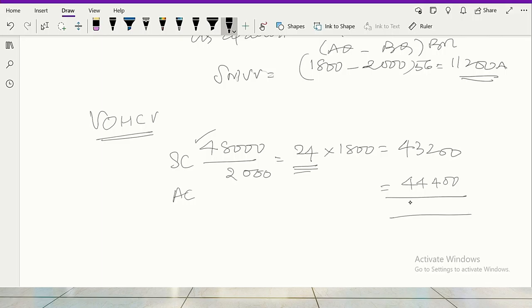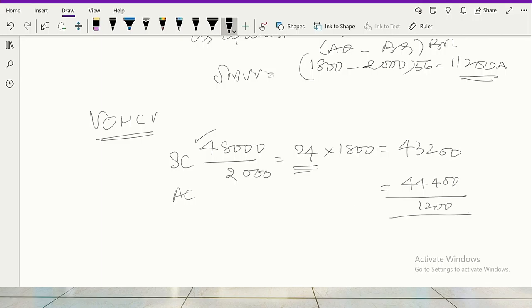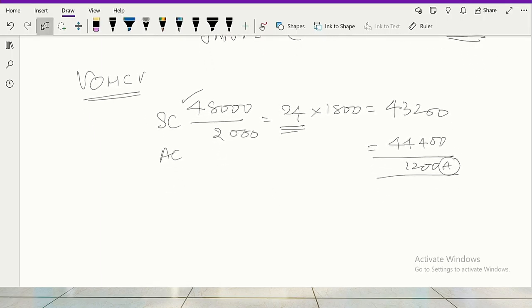This is standard cost. Actual cost is equal to 44,400. So that means the variance is 1,200 adverse. There is no scarcity and all. Scarcity is only with regard to labor. So 1,200 over. Fixed overhead cost variance, nil. Anyway we are not going to consider that. Now at this juncture we are trying to prepare the reconciliation statement. So far are you okay with me? And if you want, I will explain once again.